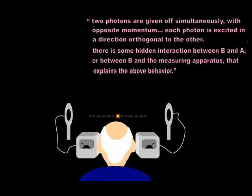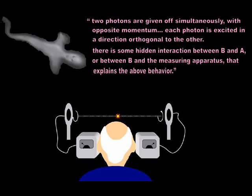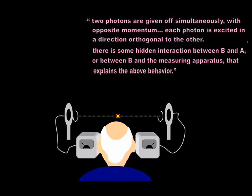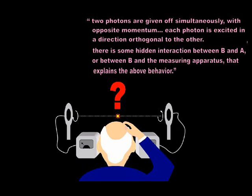Two photons are given off simultaneously with opposite momentum. Each photon is excited in a direction orthogonal to the other. There's some hidden interaction between B and A or between B and the measuring apparatus that explains the above behavior.